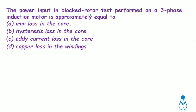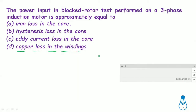The power input in the blocked rotor test performed on a three-phase induction motor is approximately equal to the copper losses only. The blocked rotor test is similar to a transformer short circuit operation. Under this condition, only copper losses are drawn.